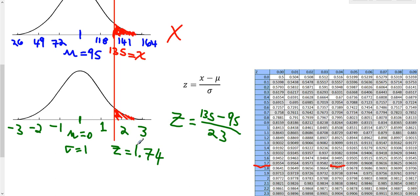the ones and tenths digit. And it's in the column that has .04. So it's in the row that has 1.7, ones and tenths, and the column that has the hundredth, .04, right here. So this area to the left over here is .9591.